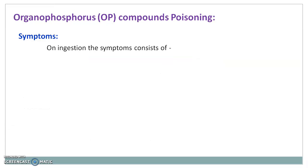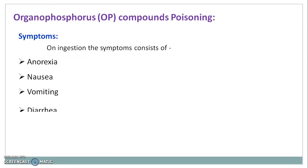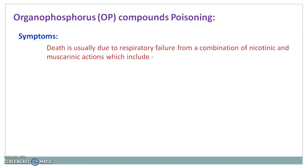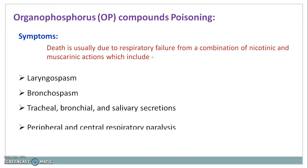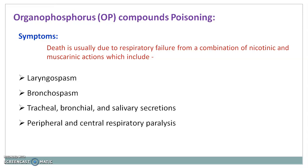On ingestion, the symptoms consist of anorexia, nausea, vomiting, and diarrhea. Death is usually due to respiratory failure from a combination of nicotinic and muscarinic effects, which include laryngospasm, bronchospasm, increased tracheal, bronchial and salivary secretions, and peripheral and central respiratory paralysis.